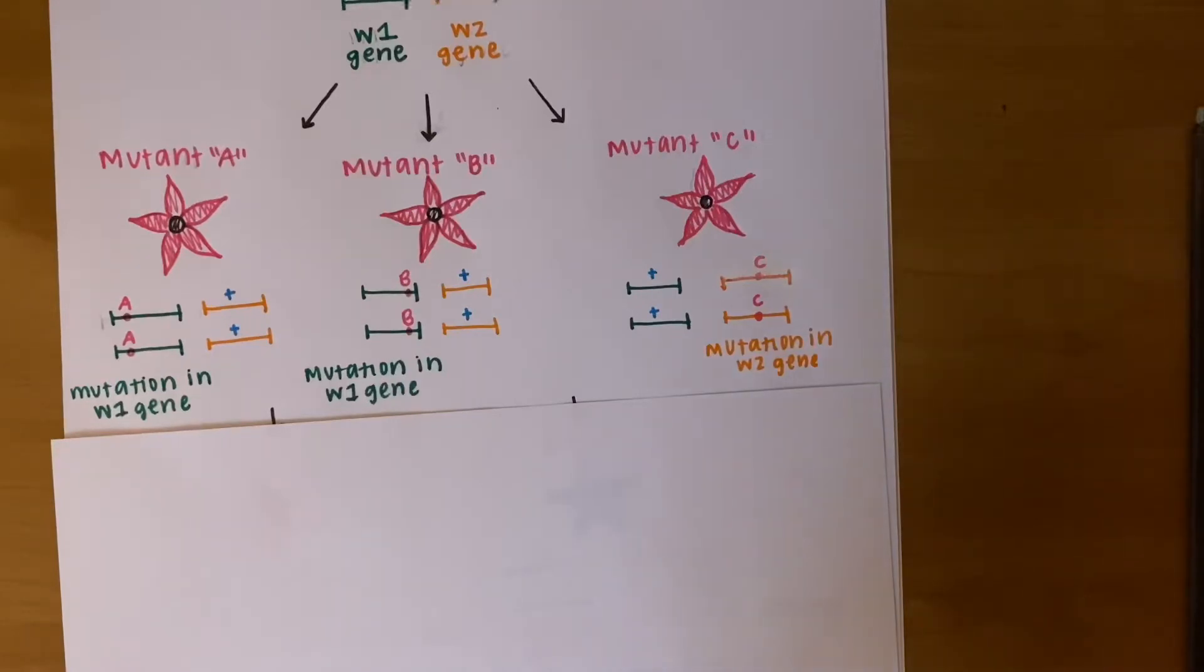However, for mutant C, this time there is a mutation in the W2 gene, the orange gene, which is different than A and B, but we still see pink petals.